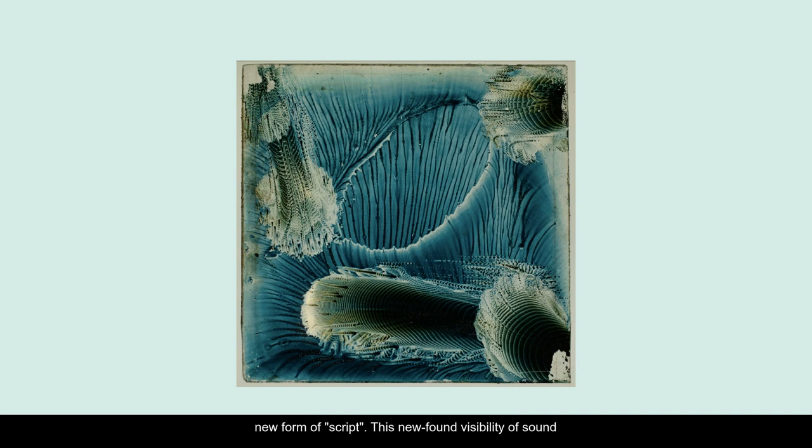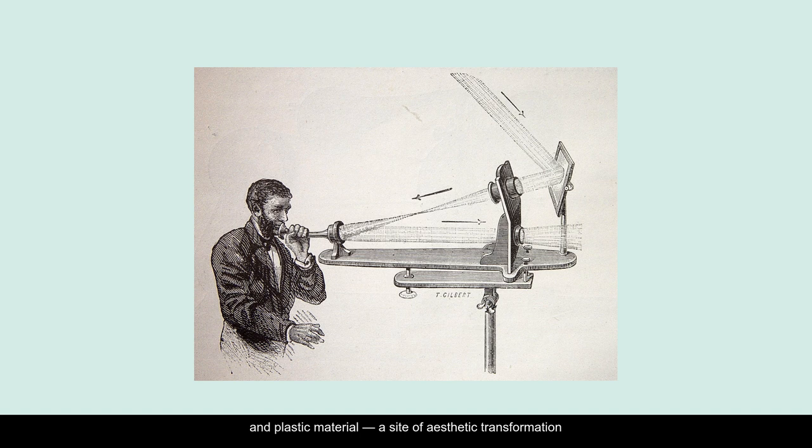This new-found visibility of sound fueled much debate between artists, musicians, scientists, and even lawyers about what precisely these scratches and squiggles constituted. Were they a kind of writing, an expository method of display and measurement, or a mutable and plastic material, a site of aesthetic transformation and potential production? Audiovisual correspondences as aesthetic concerns, often suffused with occult or spiritualist sensibilities, grew to become well-established in the more esoteric visual and musical practices of the late 19th century.